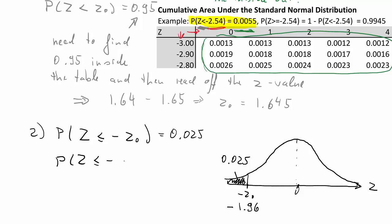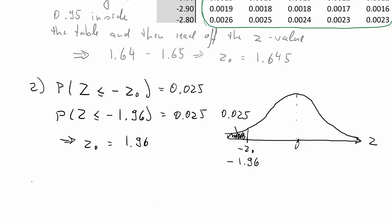The probability that Z is smaller or equal than negative 1.96 is equal to 2.5%. And therefore z0 is actually 1.96. So that's the solution to the second question.